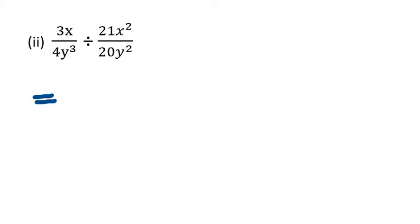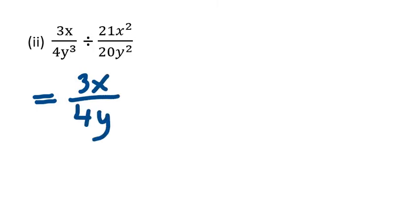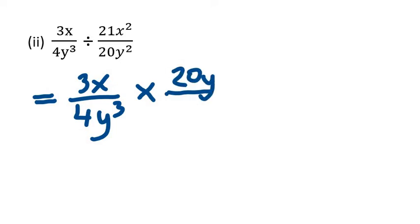Now we're actually dividing two fractions, and we know the basics of dividing fractions. We change division to multiplication and reciprocate the divisor. So we're going to do the same thing here. We have 3x over 4y to the third power, multiplied by — we're going to reciprocate — so we have 20y squared. When I say reciprocate, the denominator becomes the numerator and vice versa.